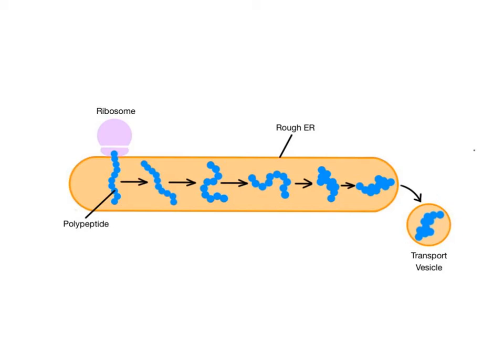Think of the rough ER like a protein-making factory that is manufacturing and processing proteins for delivery within the cell. The rough ER doesn't do much secretion, with most of its products staying in-house inside the cell.